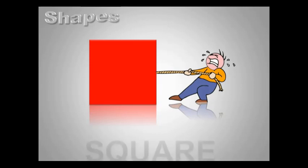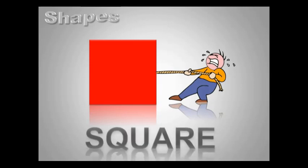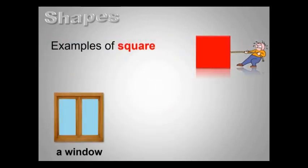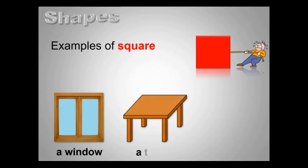This is a square. A square has four equal sides and four corners. A window, a table, a tile are often squared in shape.